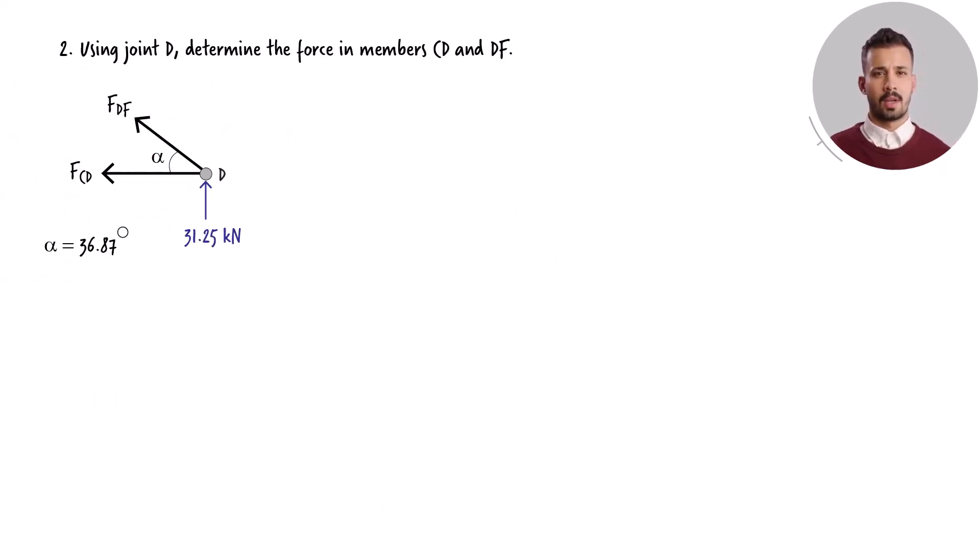Here is the free body diagram at joint D. There are 2 unknown forces at this joint: the force in member DF and the force in member CD. The joint equilibrium equations are. Solving these equations for the unknown forces, we get.